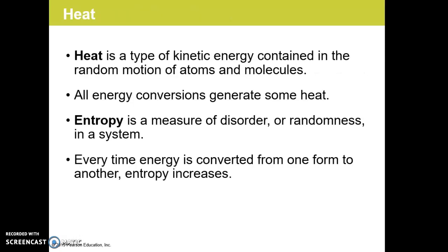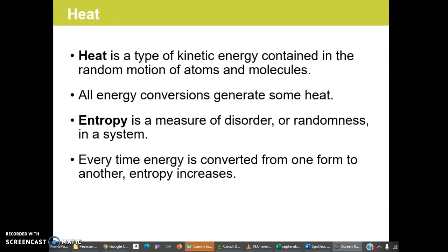Heat is a type of kinetic energy that's contained in the random motion of atoms or molecules. Every time there's a conversion of energy between different forms, a certain amount of heat is generated. Entropy is a concept that describes the fact that systems tend toward disorder or chaos. It's also a measure of the disorder or randomness within a system. So every time energy is converted from one form to another, entropy increases.